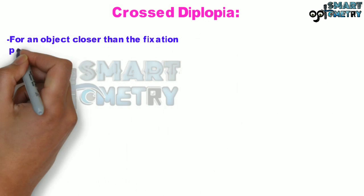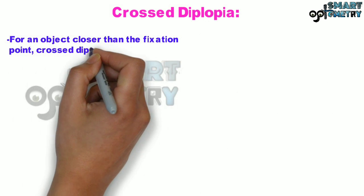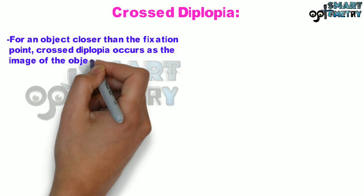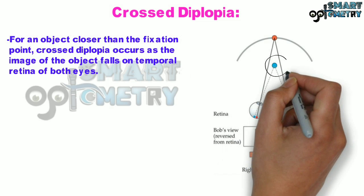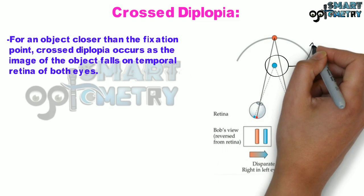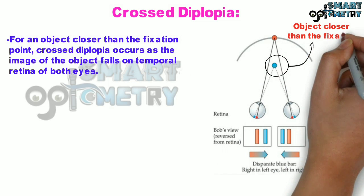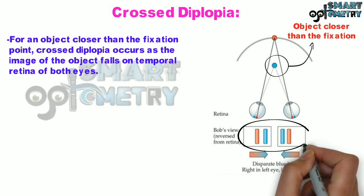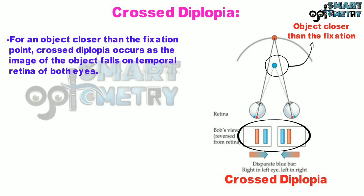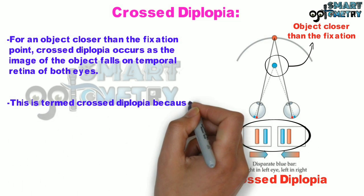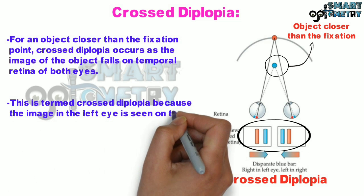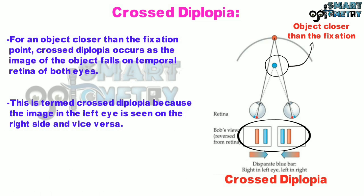For an object closer than the fixation point, crossed diplopia occurs as the image of the object falls on the temporal retina of both eyes. In the diagram alongside, you can see that the object focused is closer than the fixation point, producing crossed diplopia. This is termed crossed diplopia because the image in the left eye is seen on the right side and vice versa.